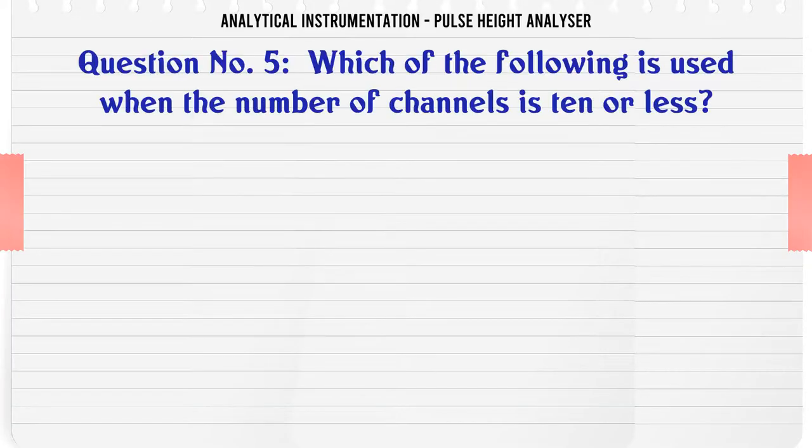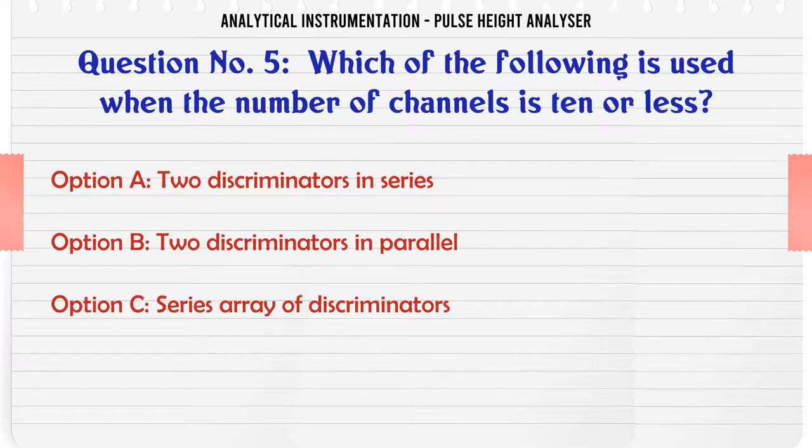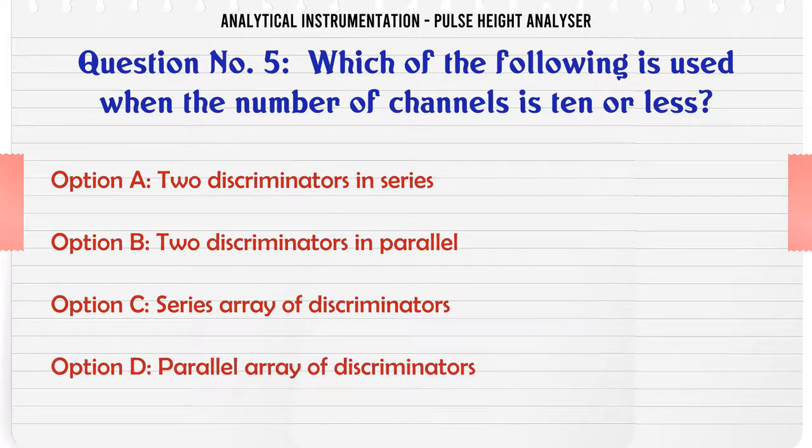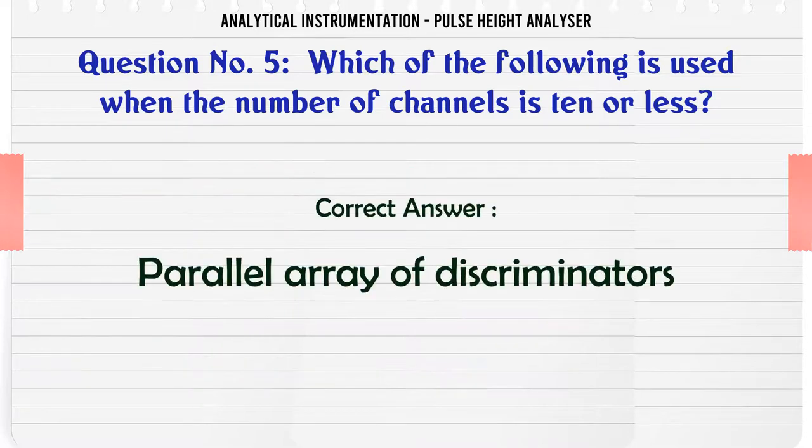Which of the following is used when the number of channels is 10 or less? A. Two discriminators in series. B. Two discriminators in parallel. C. Series array of discriminators. D. Parallel array of discriminators. The correct answer is: